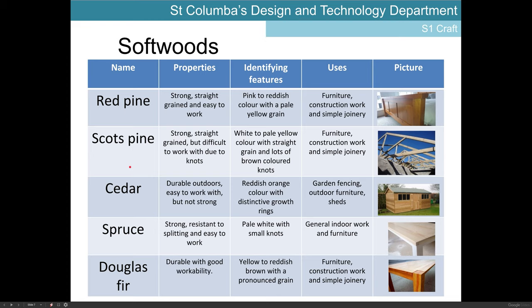Scots pine is very similar to red pine, but tends to be more difficult to work with due to the knots involved — it tends to have a lot more knots than red pine. They're grown in different areas of the world and Scots pine has more knots, making it a bit more difficult to work with. It's paler in colour than red pine and is often used in joinery work — for example, you can see here the sort of beams for the roof of a new-built house.